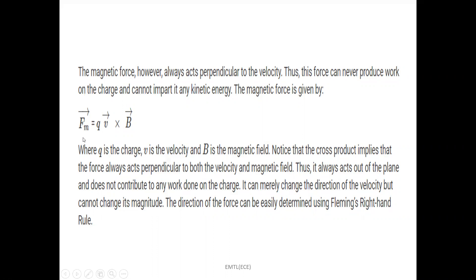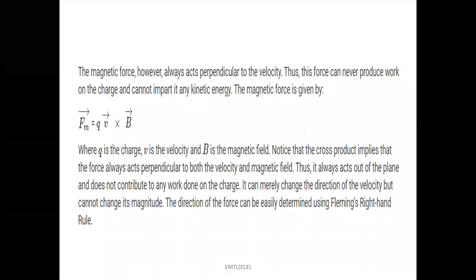The magnetic force is expressed as follows — as already discussed in the Lorentz force in the last class. Whenever a charged particle Q moves with a velocity V placed in a magnetic field B, a magnetic force is developed. That magnetic force is indicated by the expression FM = Q(V × B). Here, Q is the charge, V is the velocity, and B is the magnetic field. The cross product between velocity and the magnetic field gives a force always perpendicular to both velocity and magnetic field — that is, magnetic force, velocity, and magnetic field are mutually perpendicular, as discussed by Fleming's right-hand rule.